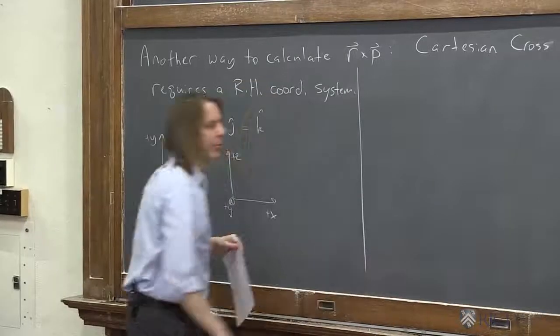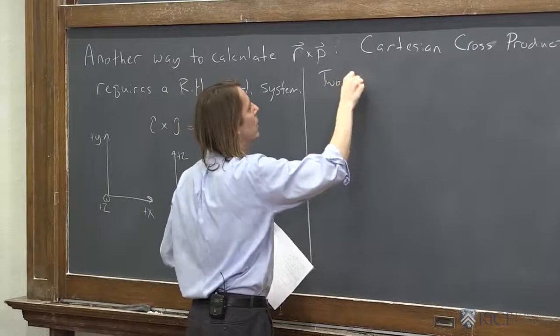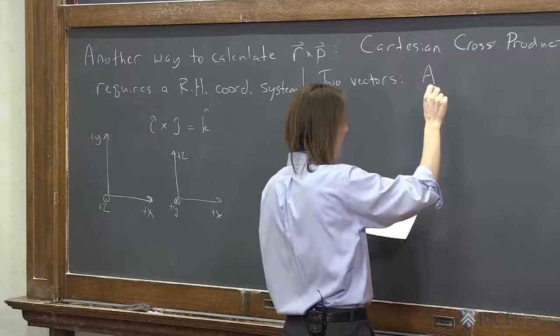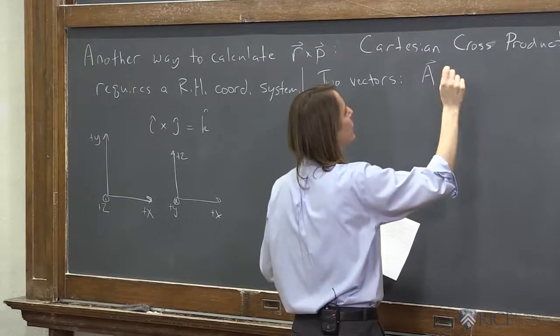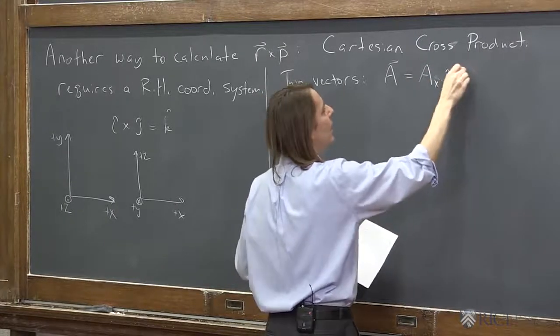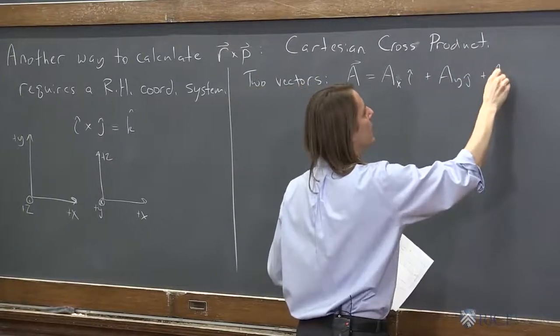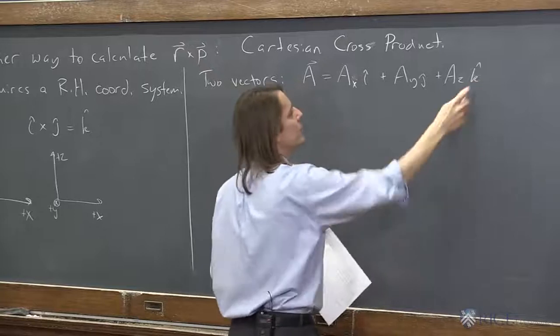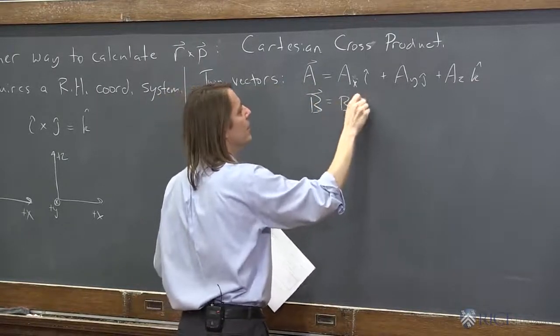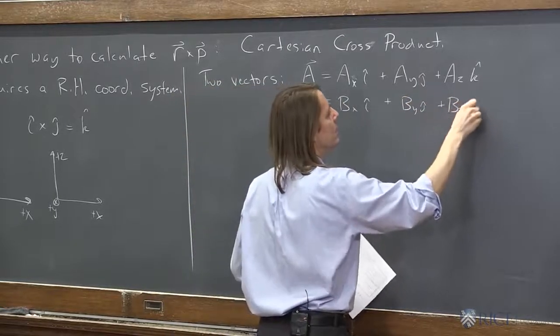So now let's say we have our proper right handed coordinate system. Now let's just take two vectors. And I'm not even going to call them r and p just to stress that this is not specific to r and p. So the vector a in a Cartesian coordinate system might be ax i hat, so this is just a number in the i hat direction, ay j hat direction, az k hat, x, y, z components. b vector might be bx i hat, by j hat, bz k hat.